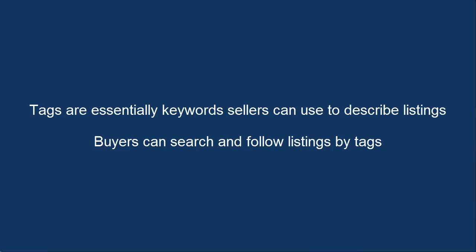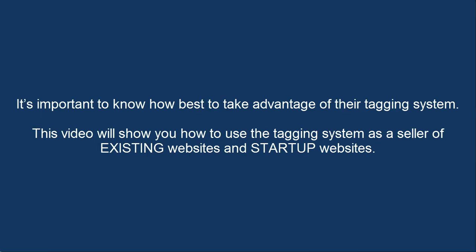For example, if you're selling a WordPress site, you might use the tag WordPress to describe your listing. In turn, the system allows buyers to search and follow listings by tags. It's important that as a website seller you know how best to take advantage of their tagging system, and this video will outline how to get the most of it as a seller of existing websites and as a seller of startup websites.